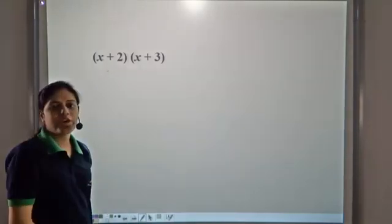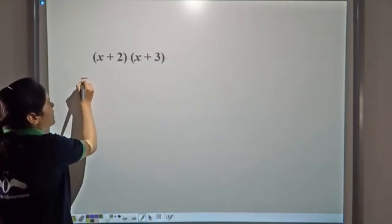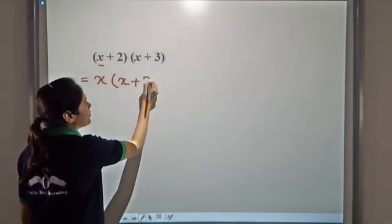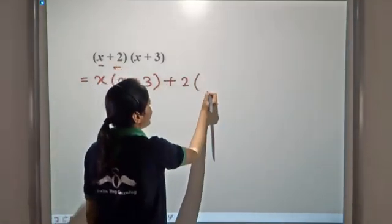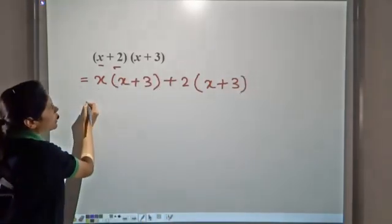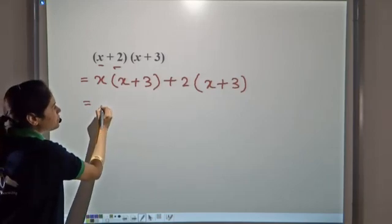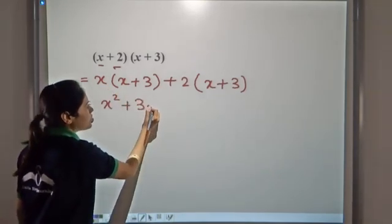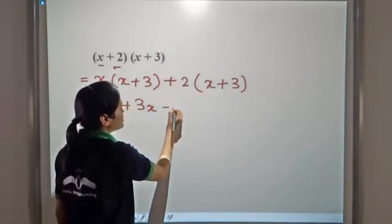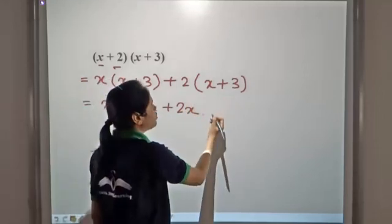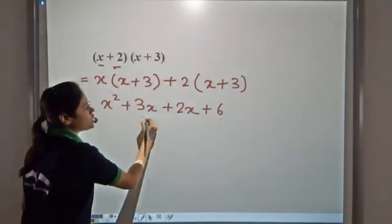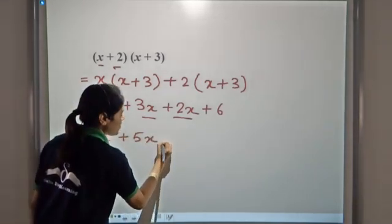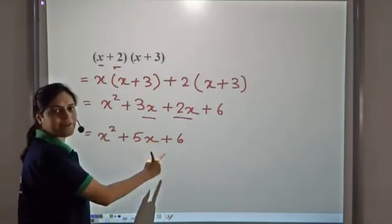We have (x+2)(x+3). Let us multiply it and see what we get. We can write it as x(x+3) plus 2(x+3). Distributing x over (x+3): x times x gives x², x times 3 gives 3x. Then 2 times x gives 2x, and 2 times 3 gives 6. Now 3x and 2x are like terms, so we combine them to get 5x.